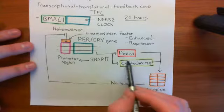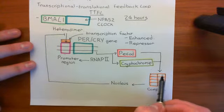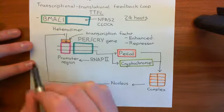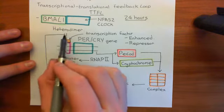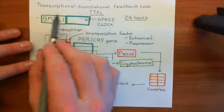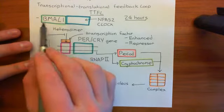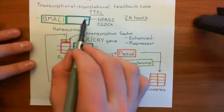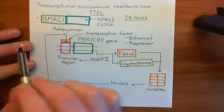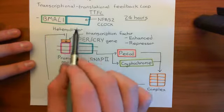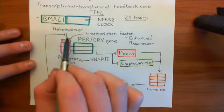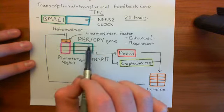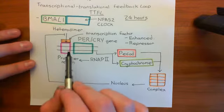The period and cryptochrome proteins go into the cytoplasm, form a complex, and then this complex comes back into the nucleus and interferes with the activation of the transcription of the period and cryptochrome genes by the BMAL1/NPAS2/CLOCK heterodimer. So it stops this activation of its own production — it is therefore a feedback loop.